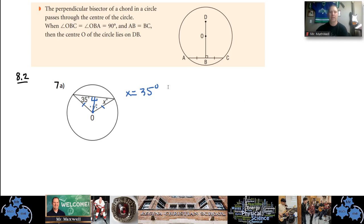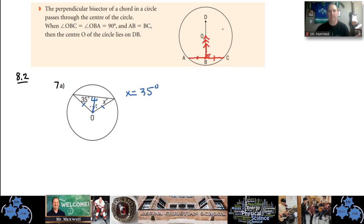The next point, also in 8.2: the perpendicular bisector of a chord in a circle passes through the center. A perpendicular bisector cuts the chord in half at 90 degrees, which means that line must eventually travel through the center. This is very similar to the last two properties — really three different ways to look at the same idea.